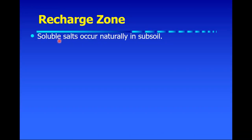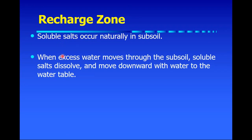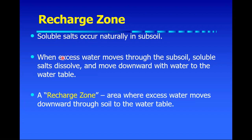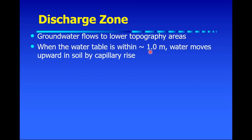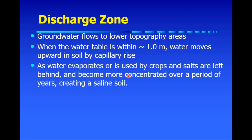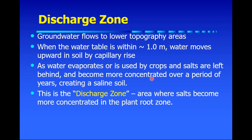We have many soluble salts that occur naturally in our subsoil, and when excess water moves through the subsoil, those soluble salts dissolve, move downward to form a water table, and that location is the recharge zone. The discharge zone is where groundwater flows to lower topographic areas. When the water table is within one or sometimes two meters of the surface, capillary action brings water and salts up into the root zone. As the water evaporates or is used by crops, the salts are left behind. This takes many years — 20, 40, 60, even 80 years — depending on how far that water travels.